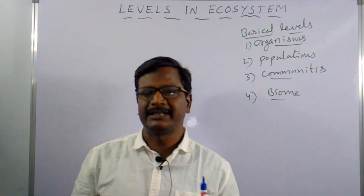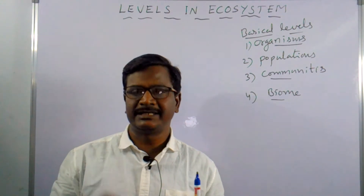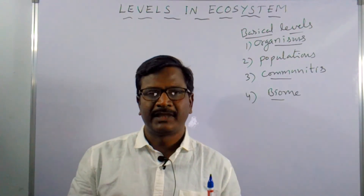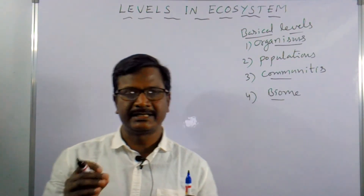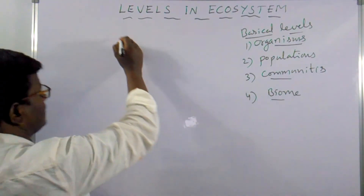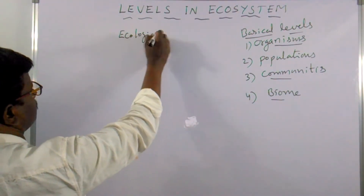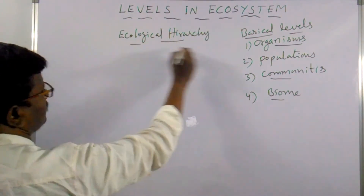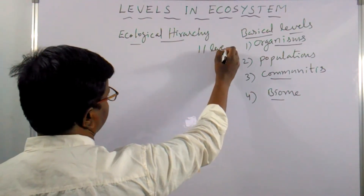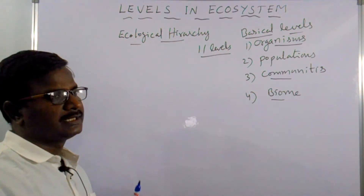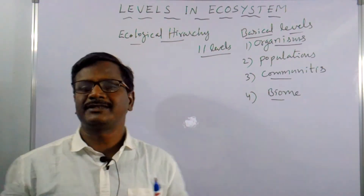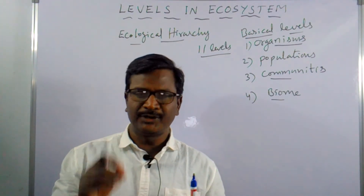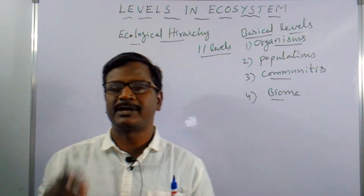Ecological hierarchy is a graded series that consists of 11 levels, starting from cell to ecosphere. There are 11 levels present in the ecological hierarchy.